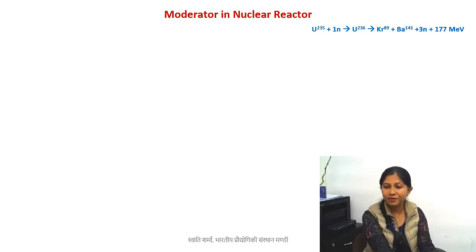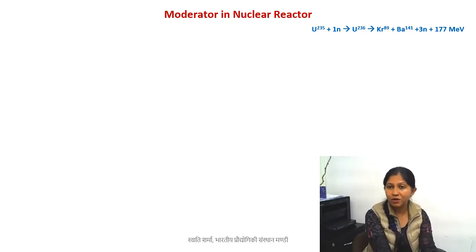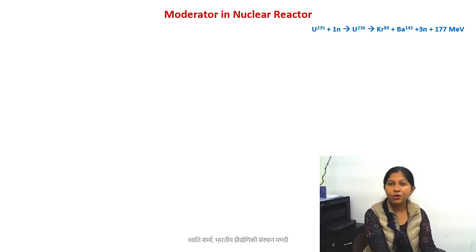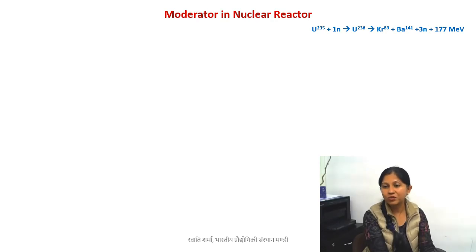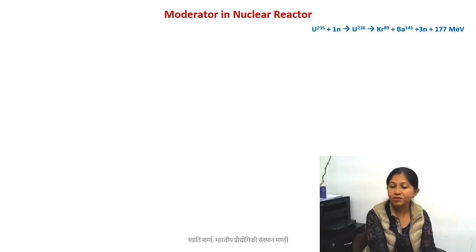Here on the screen you see a common reaction which takes place in uranium-based power plants. You have uranium-235, you hit it with one neutron, you get uranium-236 which is an unstable isotope. It further splits into krypton and barium, produces three more neutrons, gamma rays, and a lot of energy.